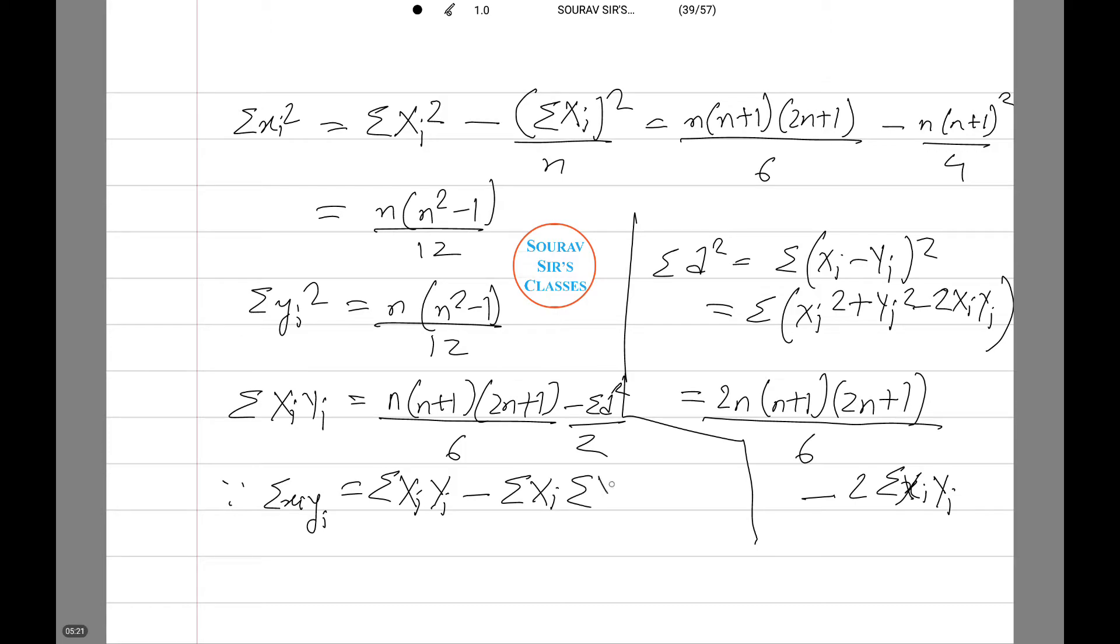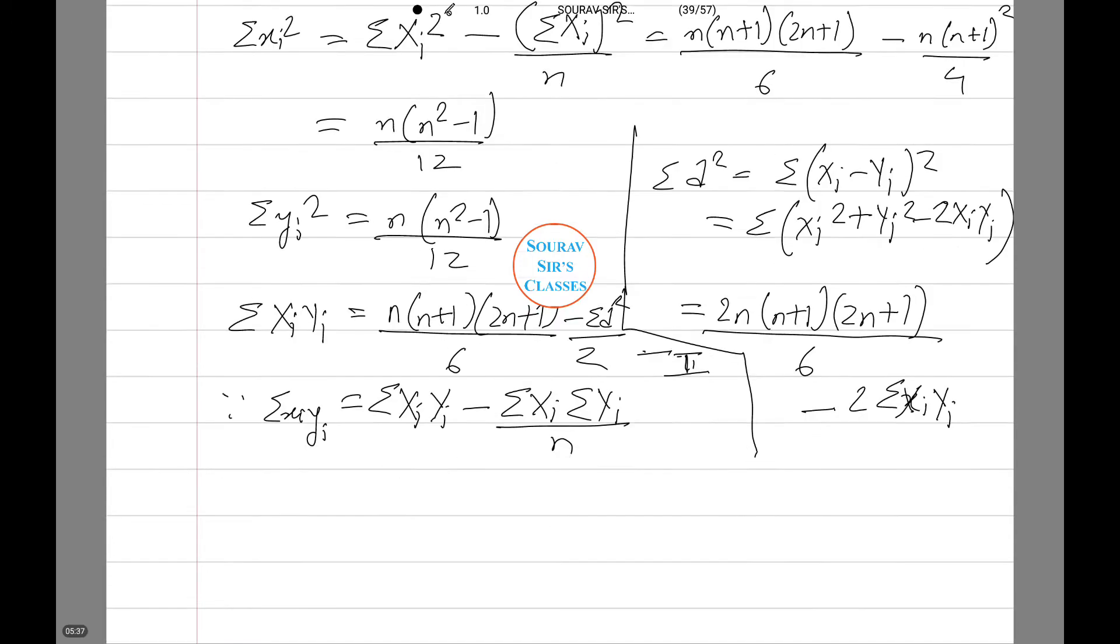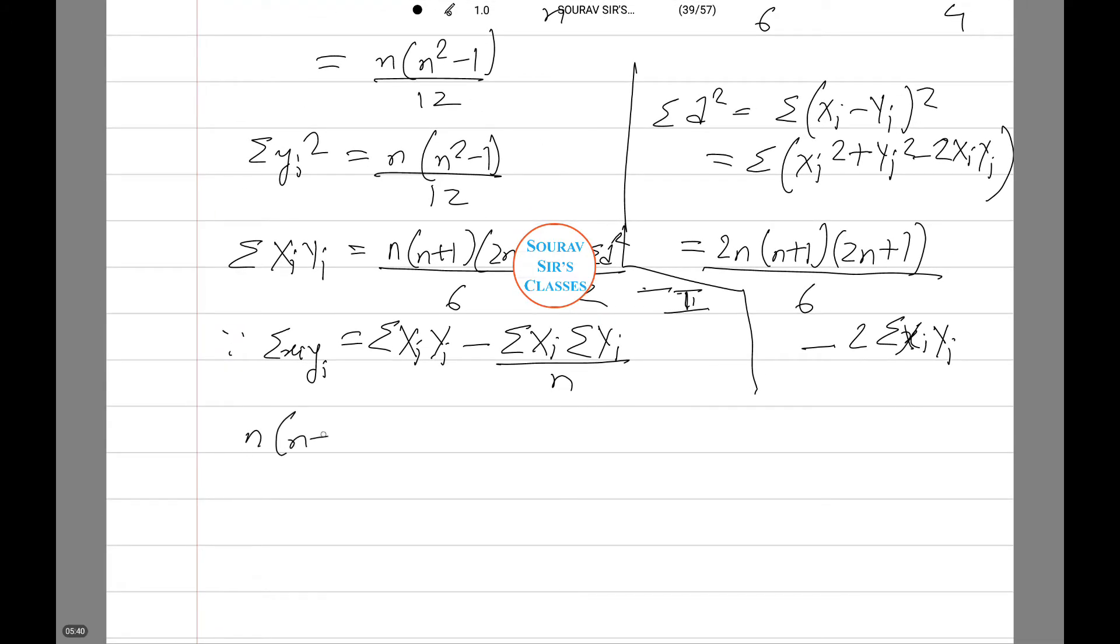Since summation xi yi equals to summation capital XI capital YI minus summation xi summation yi whole divided by n. Now using this equation that we mark as number 1, we obtain n into n plus 1 into 2n plus 1 by 3 minus summation d square by 2 minus n into n plus 1 by 4 whole square, which is finally equals to n into n square minus 1 by 12 minus summation d square by 2.